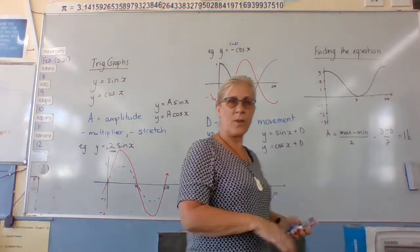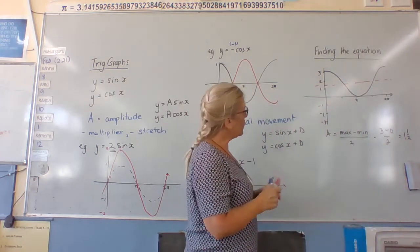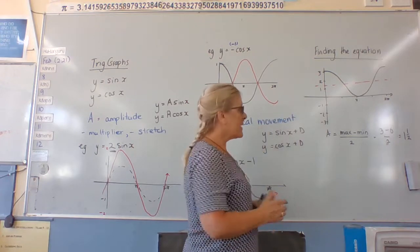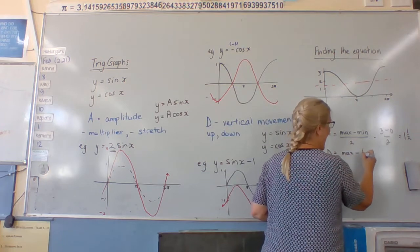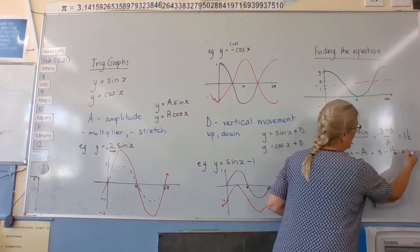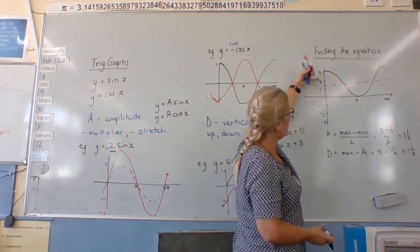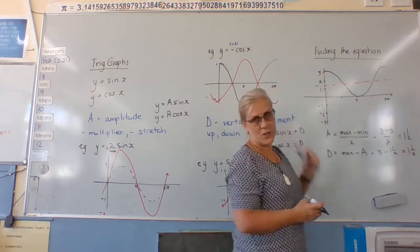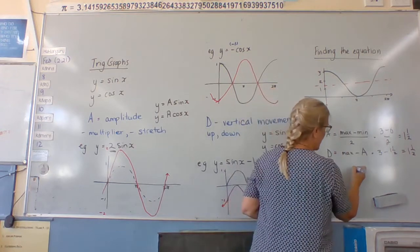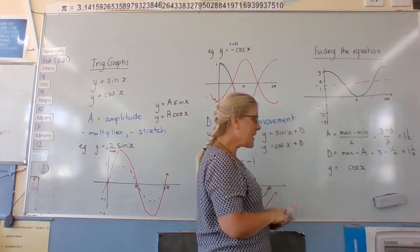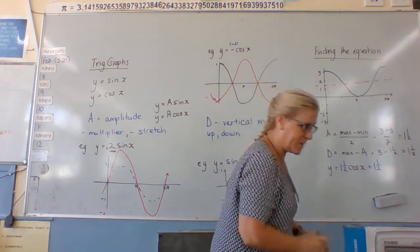Then we figure out whether it's gone up or down. To do that we find d, the vertical movement, using maximum minus a. So three minus 1.5 equals 1.5 — that's the middle of the graph. It goes 1.5 up and 1.5 down from the midline. Don't be fooled into thinking a is three just because it goes from three to zero — a is from the middle to the top or bottom. The graph starts and looks like a C, so it's a cosine graph: y equals 1.5 cosine x plus 1.5.